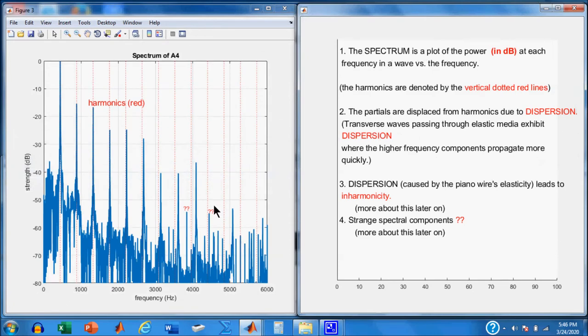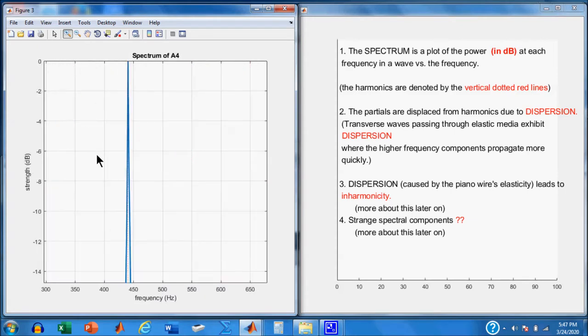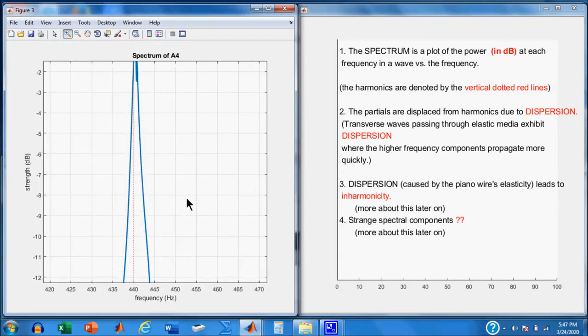Here's the spectrum of that wave. I'm plotting the power at each frequency in decibels along this axis, and the frequency along this axis from 0 to 6,000 hertz. The blue is the actual spectrum of the signal. These blue peaks here are the partials. The red dotted lines are where the harmonics would occur. Here's the first partial, also the fundamental, first harmonic. They all go together at 440 hertz.